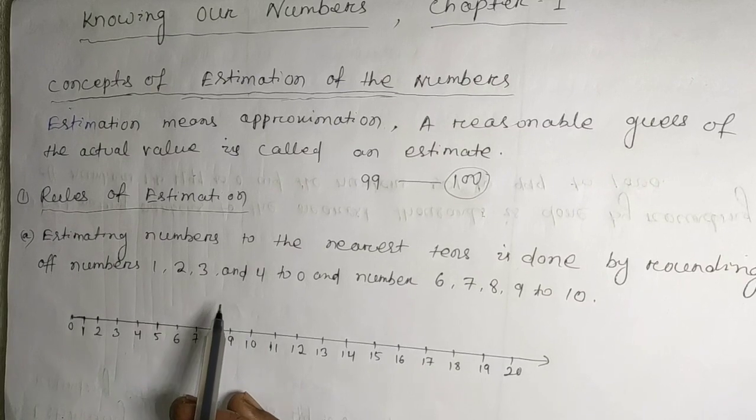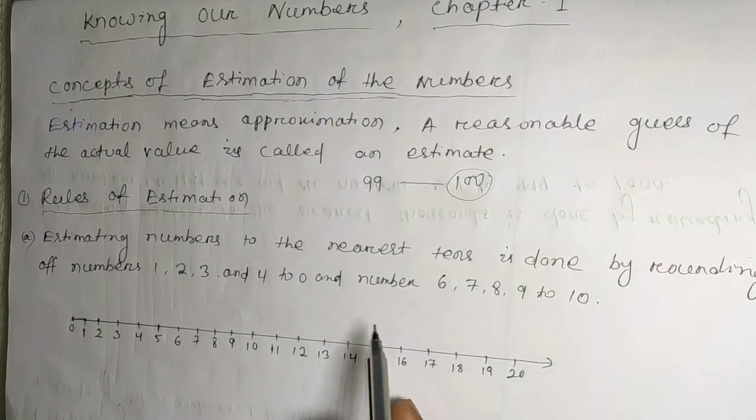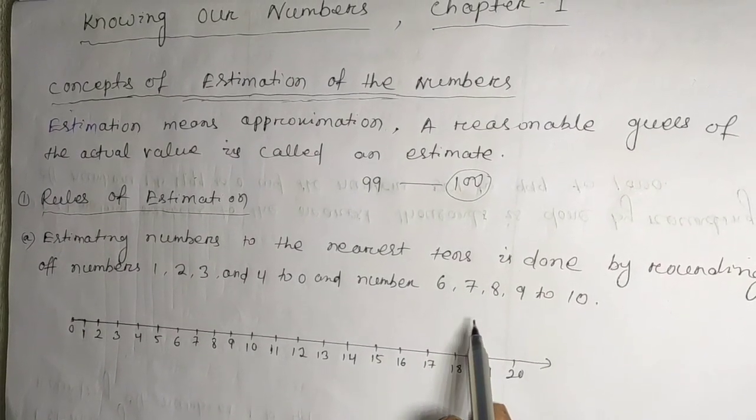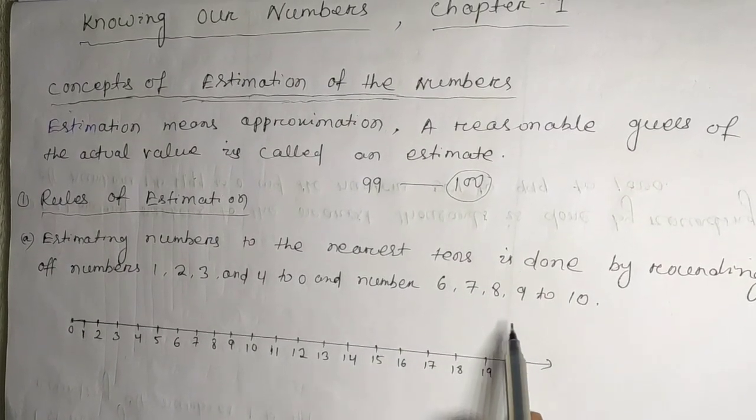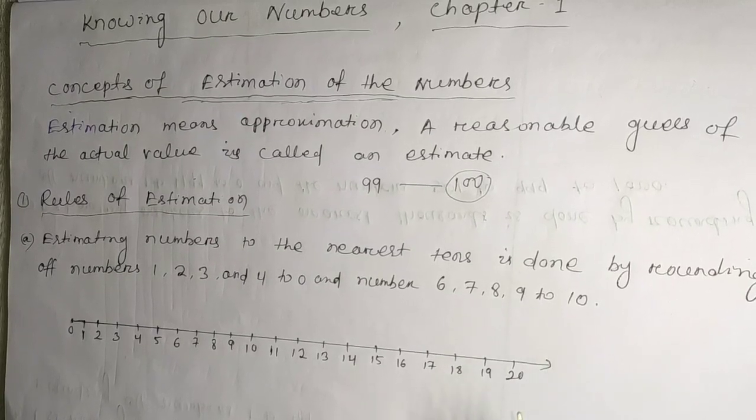Estimating numbers to the nearest tens is done by rounding up. Numbers 1, 2, 3, and 4 are rounded down to 0, and numbers 6, 7, 8, 9 are rounded up to 10.